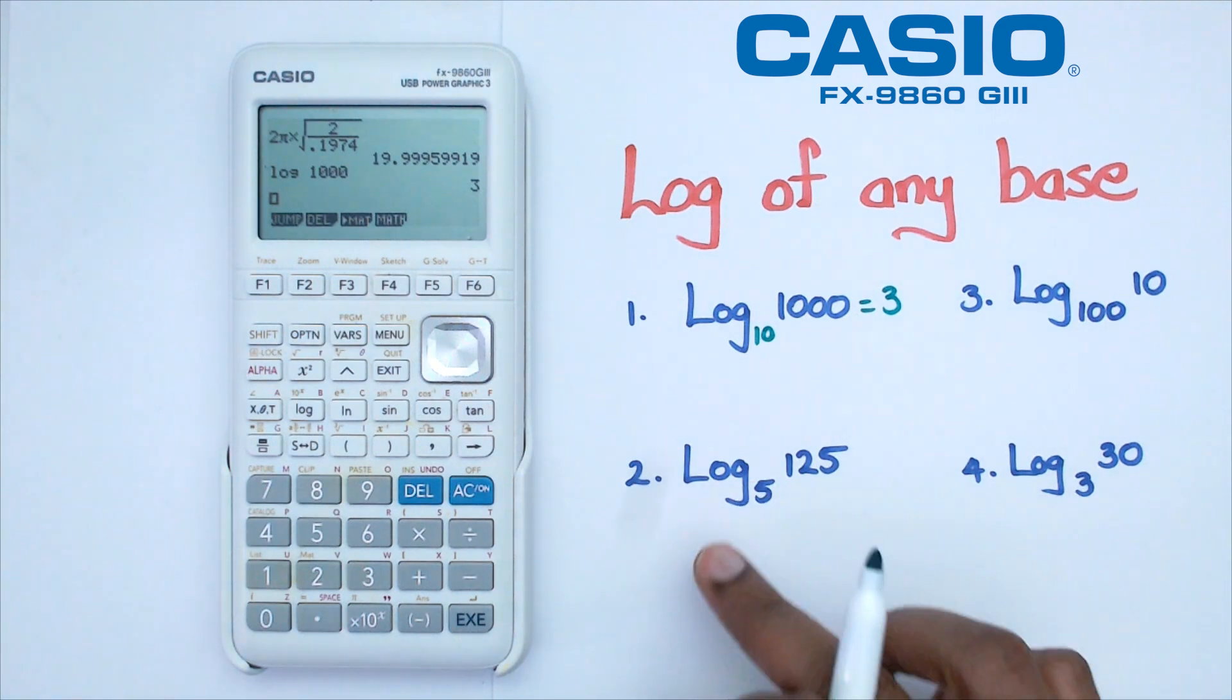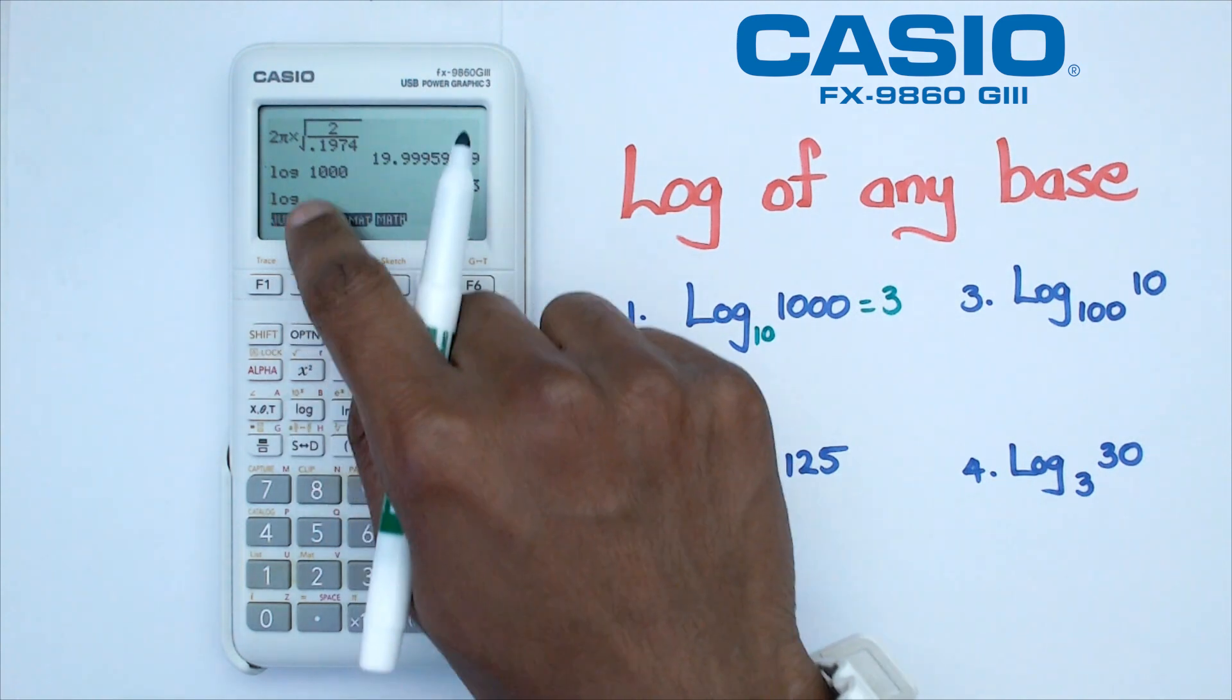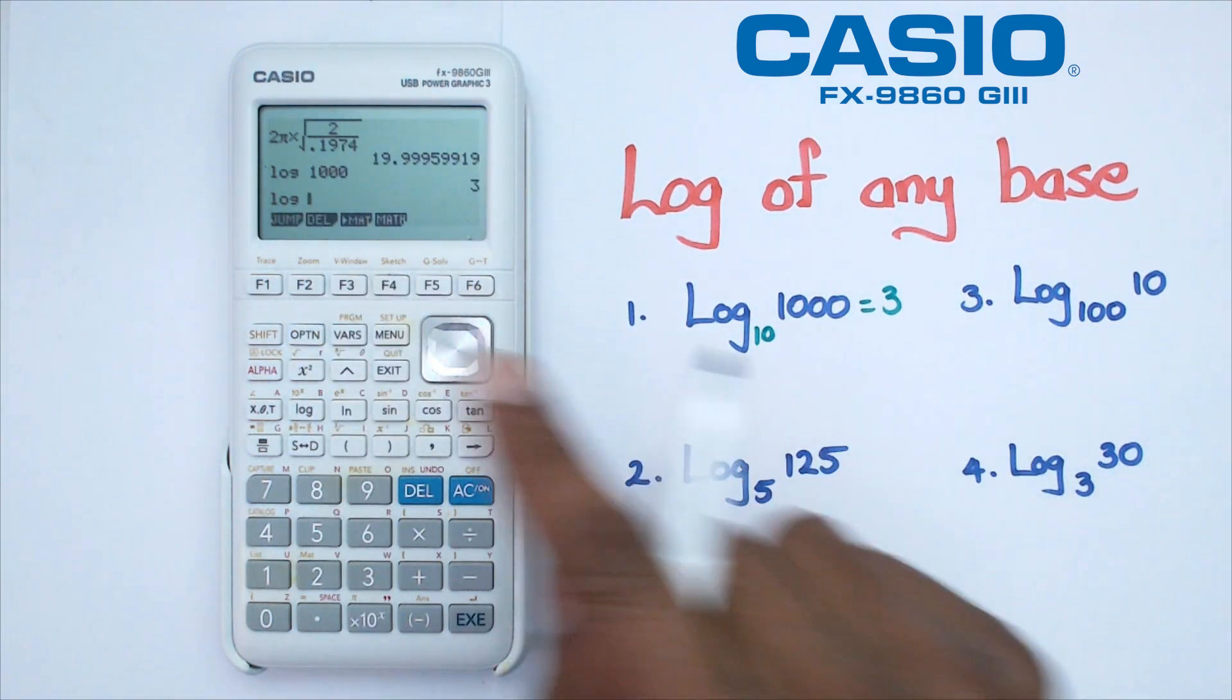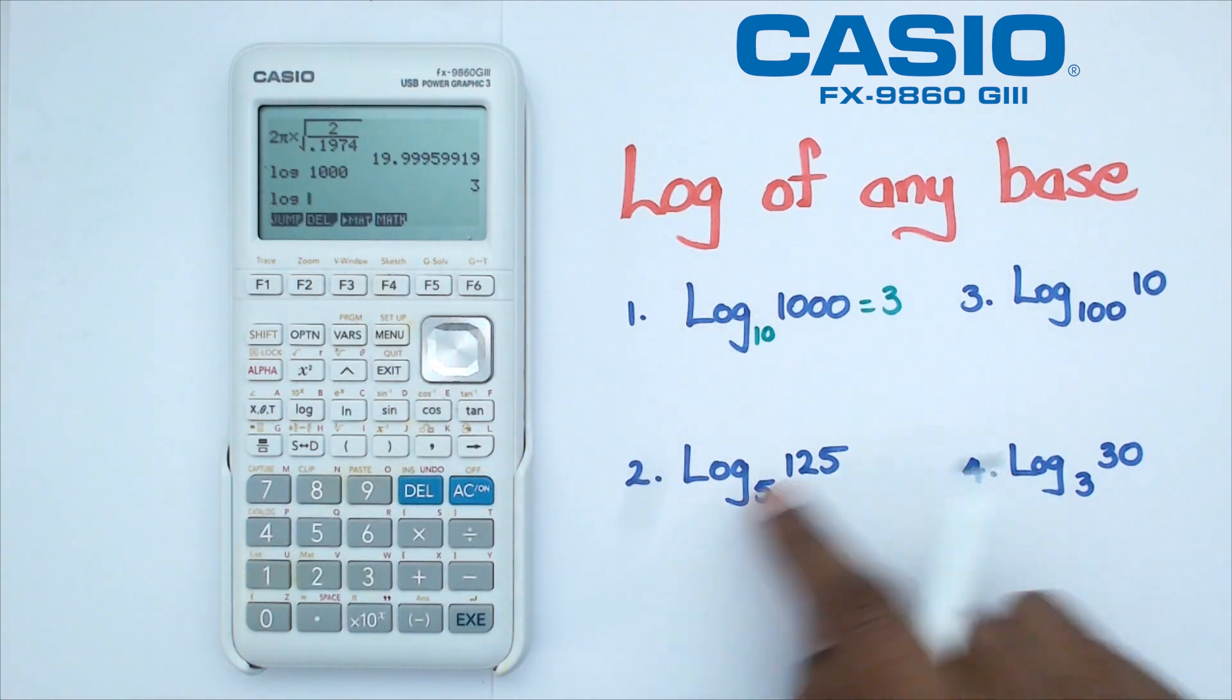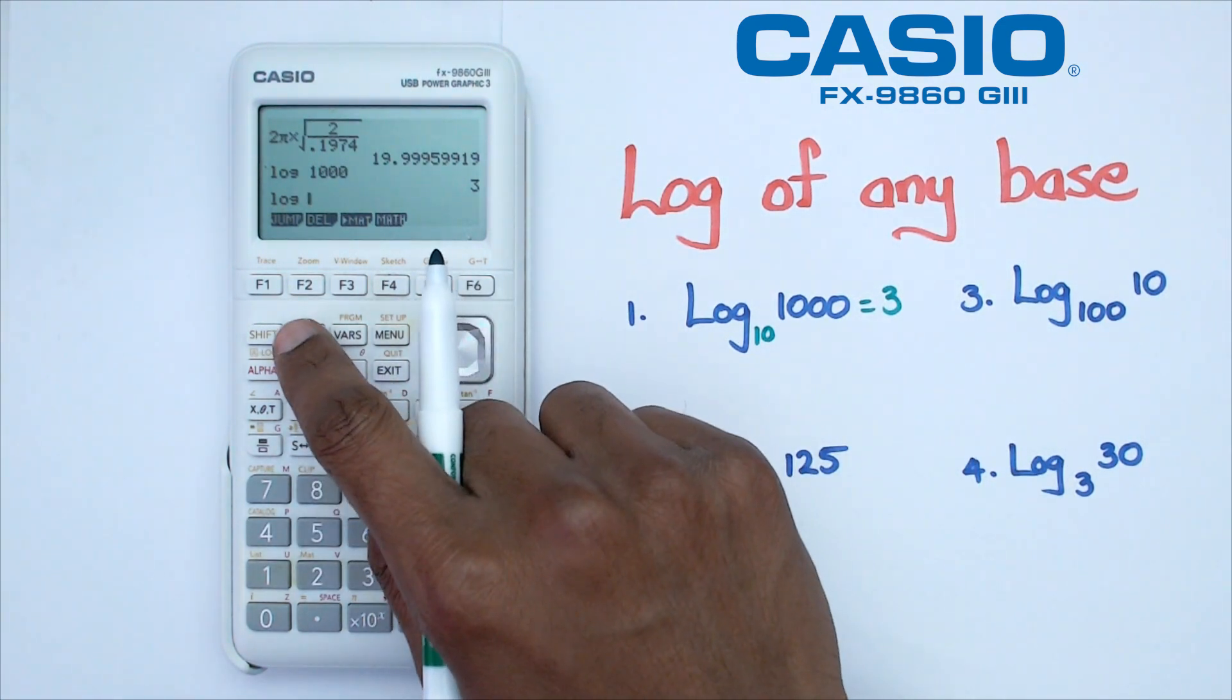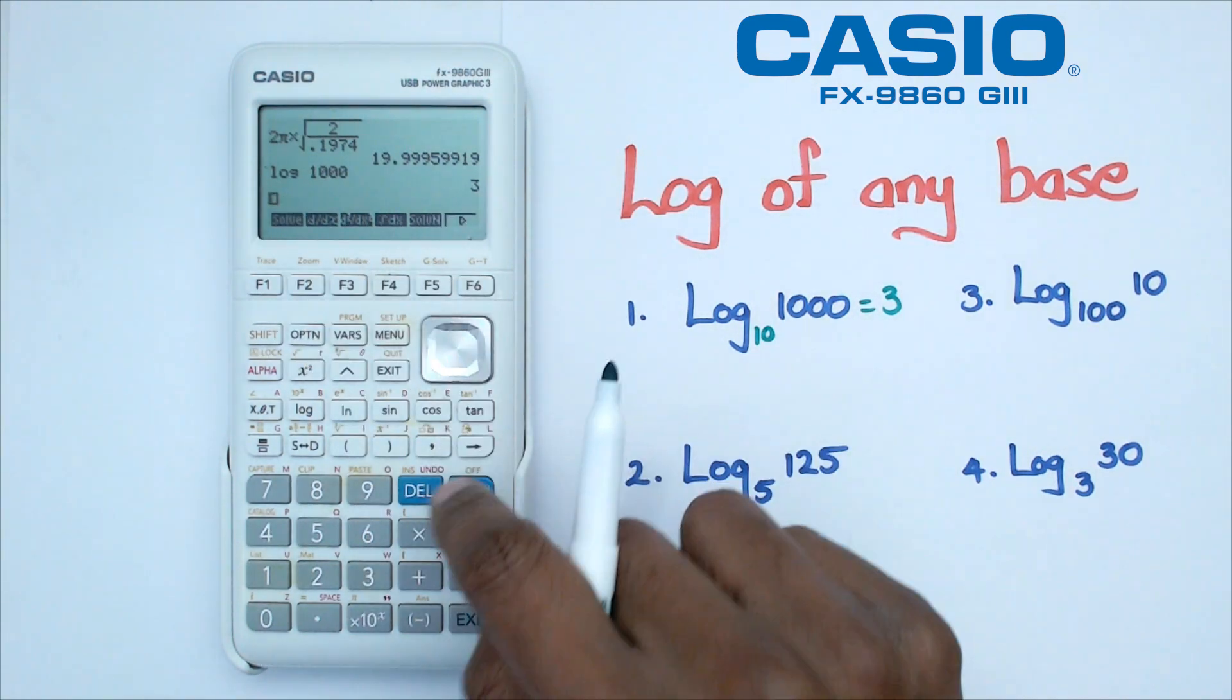But if you look at question number two, we've got a base of five. Now the problem is, if I click on log, it's always going to go to base of 10. So what we're going to use is a function within the calculator which allows you to do something like this. The way we're going to do that is click on option and go into calc mode. Actually, before doing that, let's get rid of this.